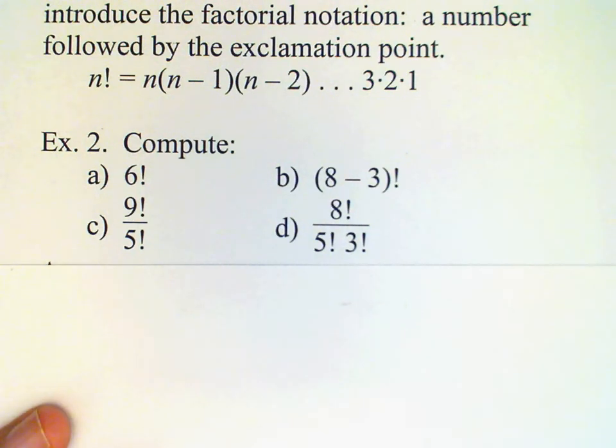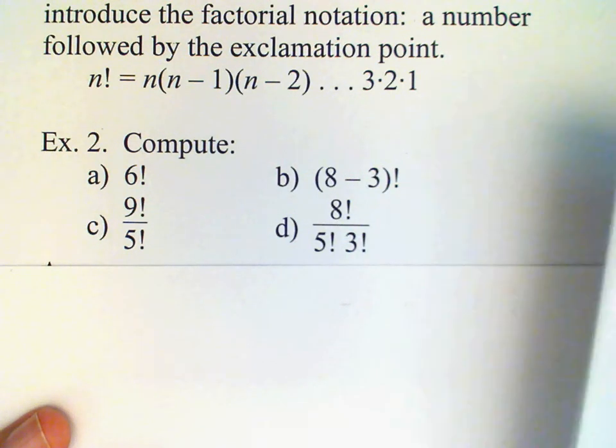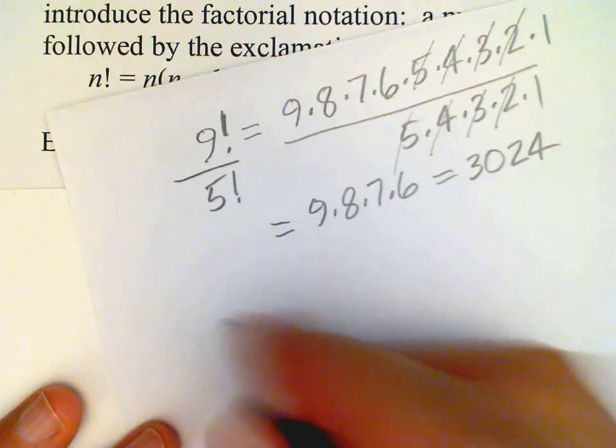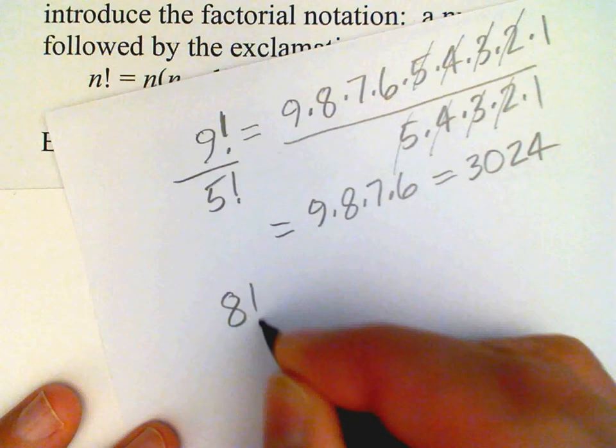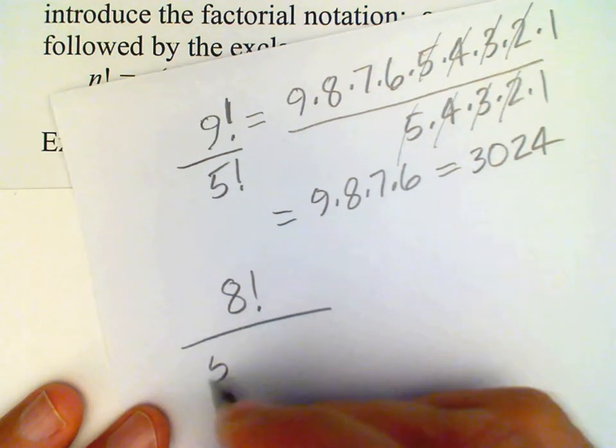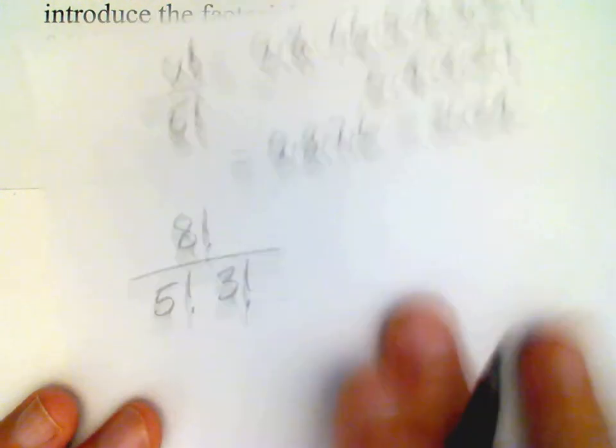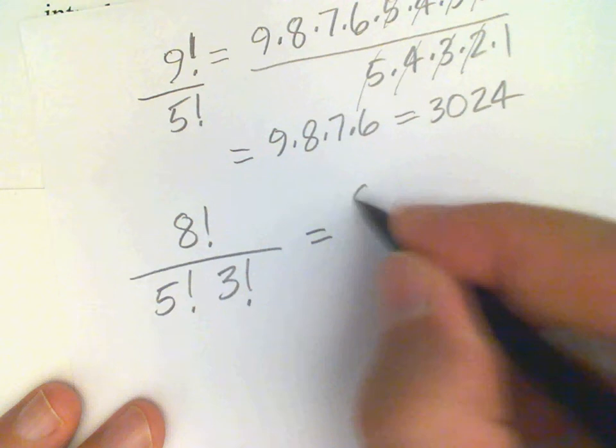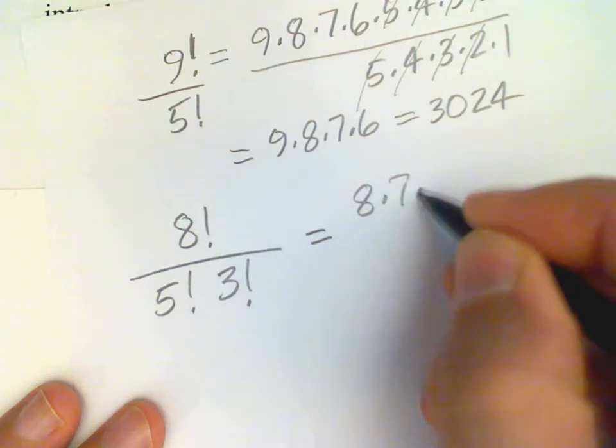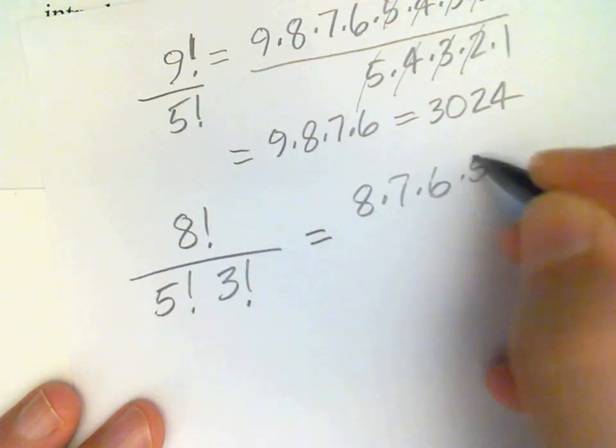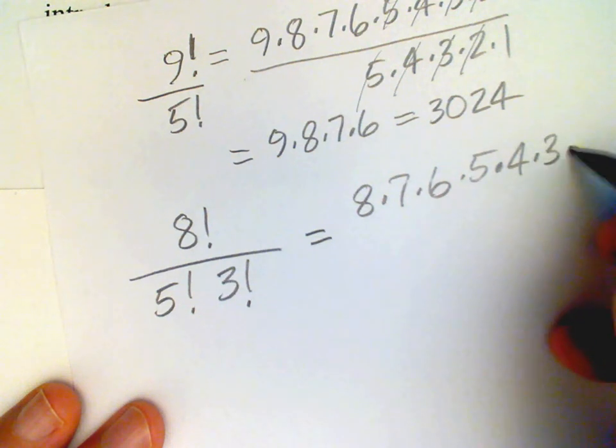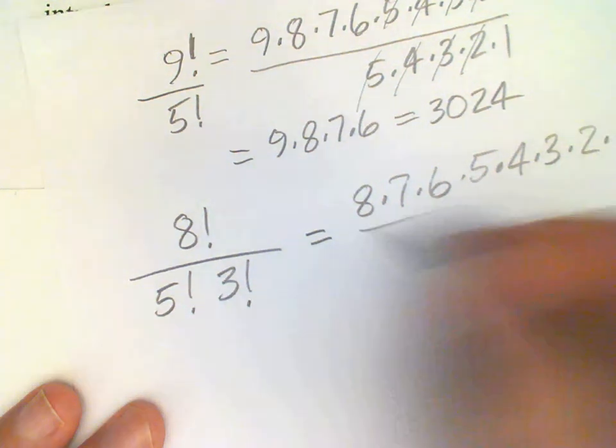The last example says 8 factorial divided by 5 factorial and also divided by 3 factorial. So let's do that example the same way. So up in the numerator we have 8 times 7 times 6 times 5 times 4 times 3 times 2 times 1.